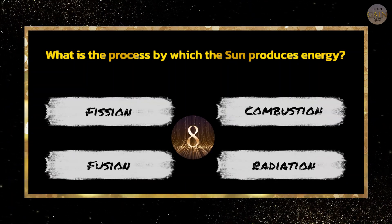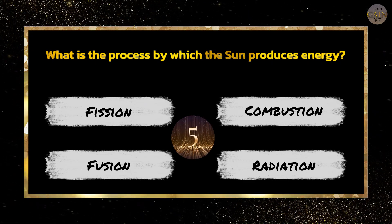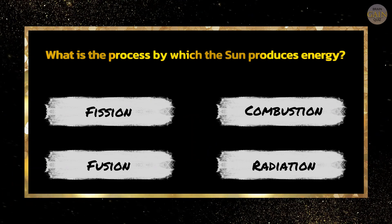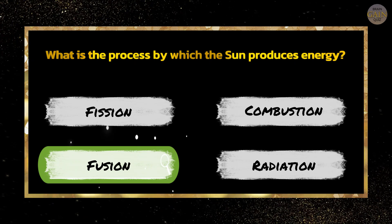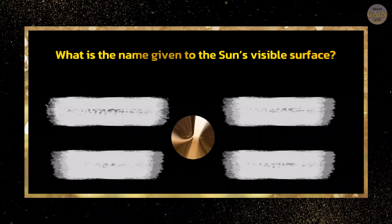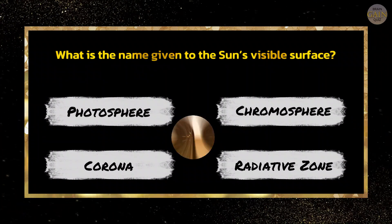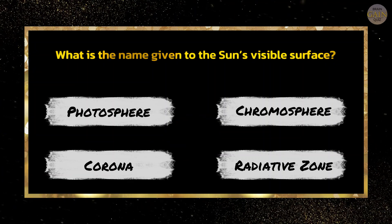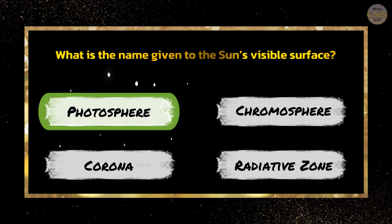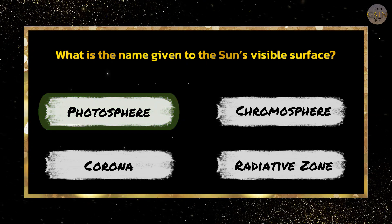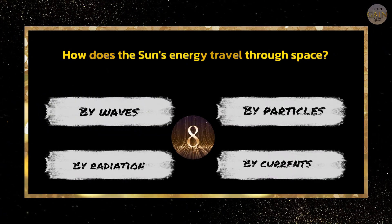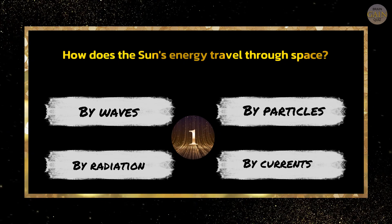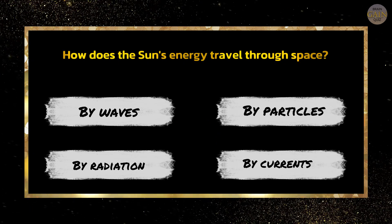What is the process by which the Sun produces energy? Radiation. What is the name given to the Sun's visible surface? Photosphere. How does the Sun's energy travel through space? By radiation.